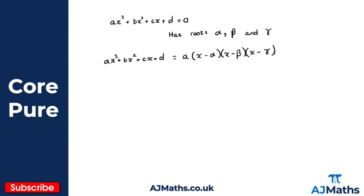What I'm going to do now is similar to what we did when we were looking at the roots of a quadratic equation — I'm going to start expanding this out on the right hand side. So this gives me x squared, minus alpha x, minus beta x, plus alpha beta, and then we've still got this term on the right of x minus gamma.